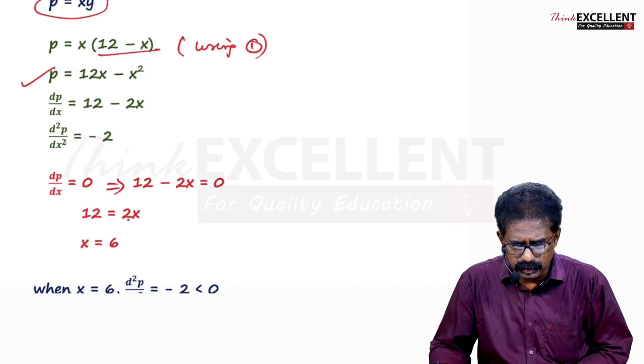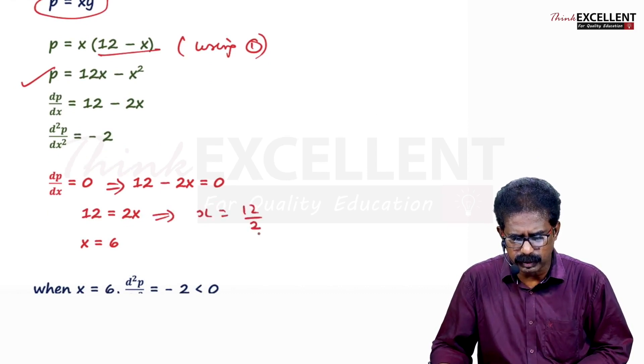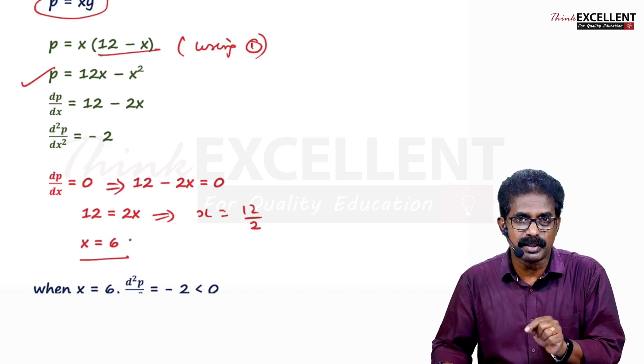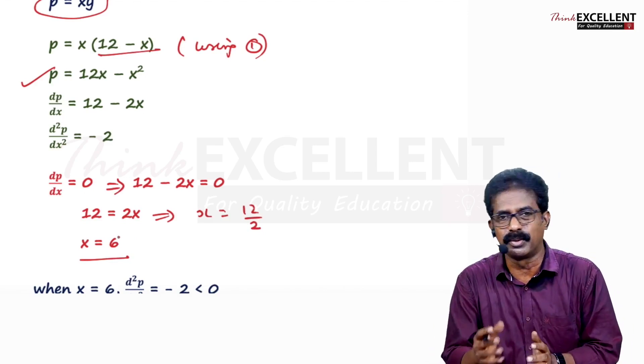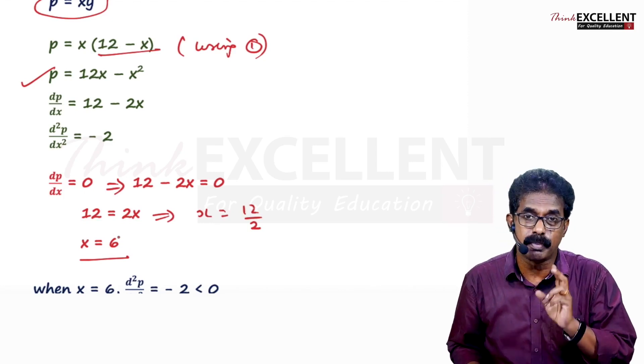So 12 is equal to 2X. So X is equal to 6. Only one point you are getting. Check. Is it positive? Yes. X equals 6 is positive. Suppose you are getting plus 6 and minus 6, don't take minus 6. No need to waste time because they said find two positive numbers.